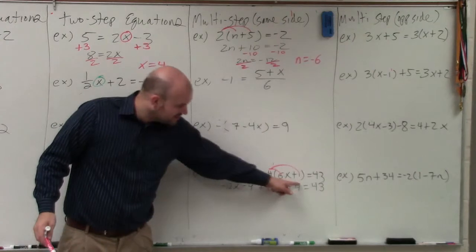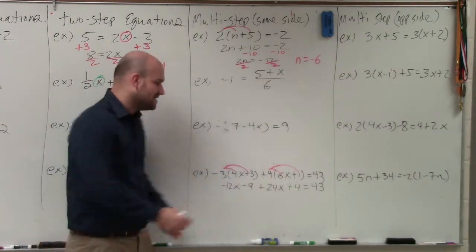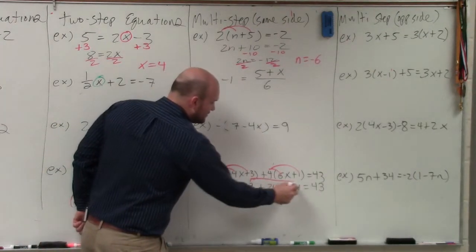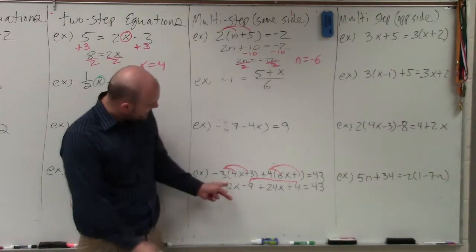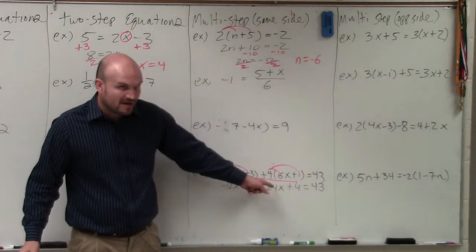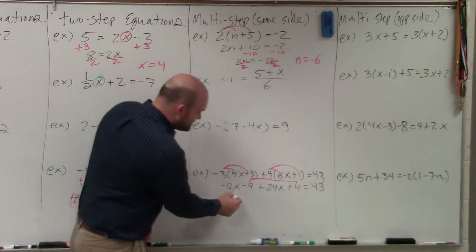Properties of equality only work when you do one operation on one side and another operation to the other side. Since my numbers negative 9 and 4 are on the same side, I can just do negative 9 plus 4. Since I have negative 12x and 24x on the same side, I can just combine them.